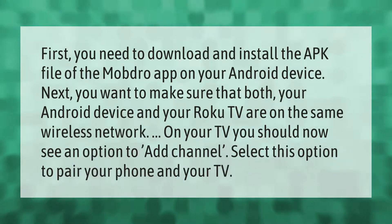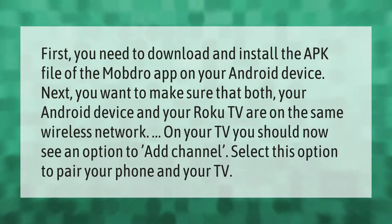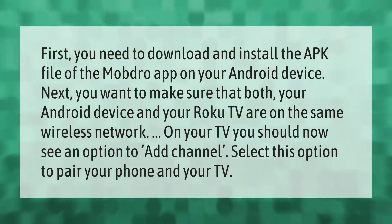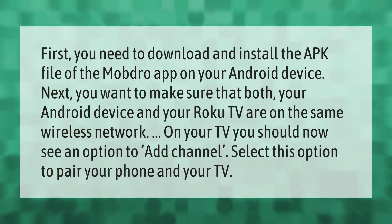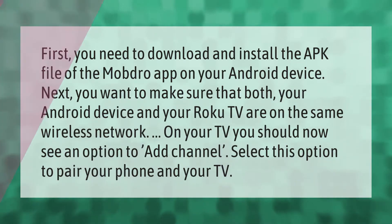First, you need to download and install the APK file of the Mobdro app on your Android device. Next, make sure that both your Android device and your Roku TV are on the same wireless network. On your TV you should now see an option to add a channel — select this option to pair your phone and your TV, and make sure that both your apps are on the same page.